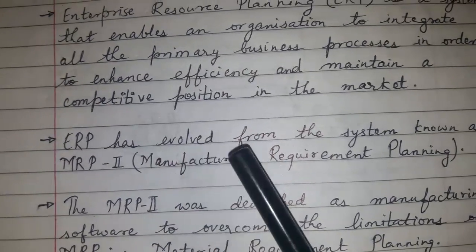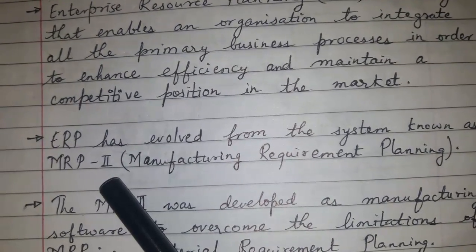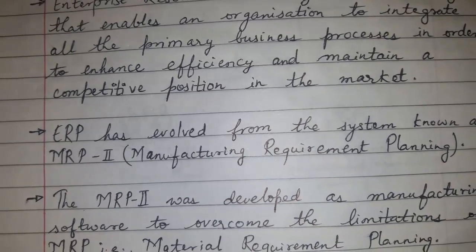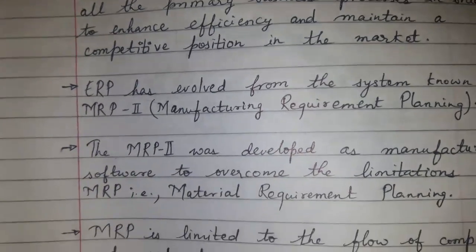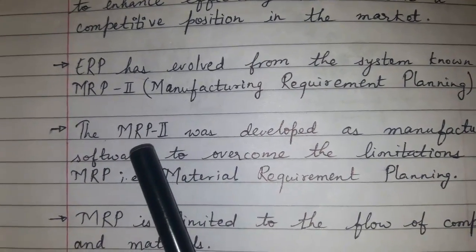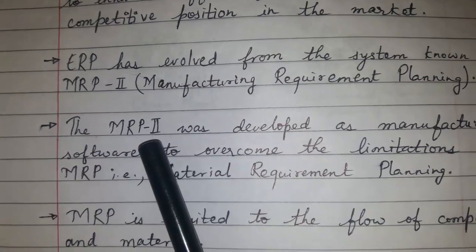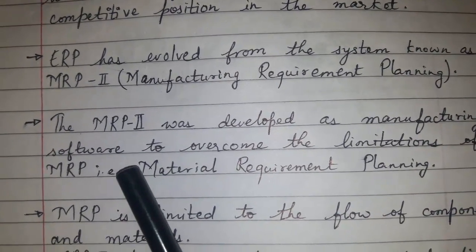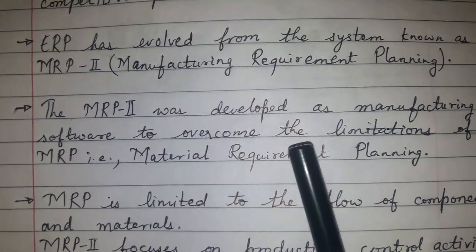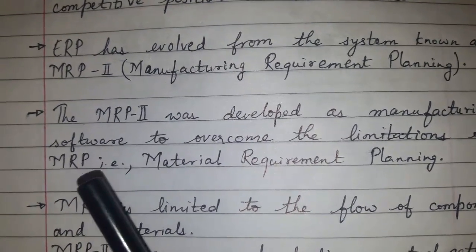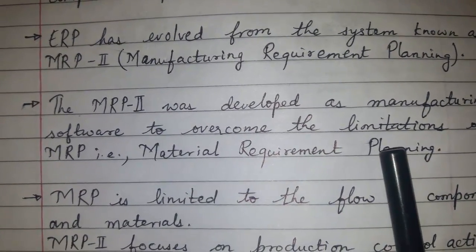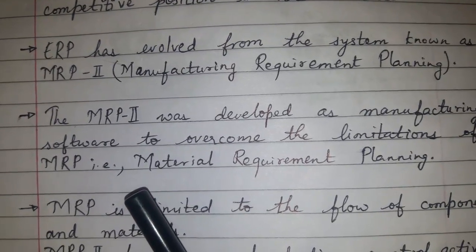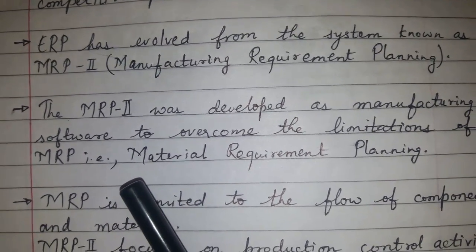ERP has evolved from the system known as MRP2, i.e. Manufacturing Requirement Planning. MRP2 was actually developed as manufacturing software to overcome the limitations of MRP, i.e. Material Requirement Planning. So let us see what is MRP, what is MRP2, and how ERP has developed from these.